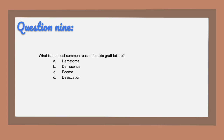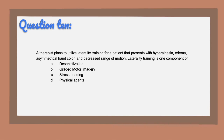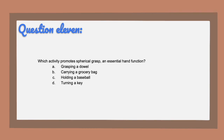Question nine: the most common reason for skin graft failure — the answer is A, hematoma. Question ten, the correct answer is B, graded motor imagery. The components of graded motor imagery are laterality training, motor imagery, and mirror training. Desensitization, stress loading, and physical agents can all be used for patients presenting with hyperalgesic symptoms or possible CRPS. Question eleven, the answer is C — holding a baseball promotes a spherical grasp. Grasping a dowel is a cylindrical grasp, carrying groceries is a hook grasp, and turning a key is lateral pinch.